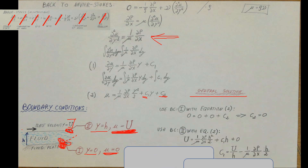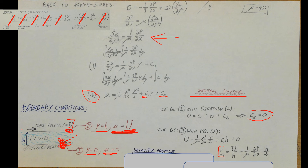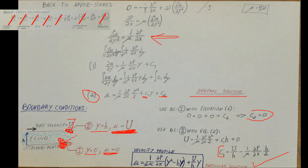Let's calculate C2 and C1. Taking the general solution and plugging in the first boundary condition, then the second boundary condition, we solve for both constants. With C1 and C2 determined, we plug them back into the general solution and arrive at our particular solution: the velocity profile with all actual values known.